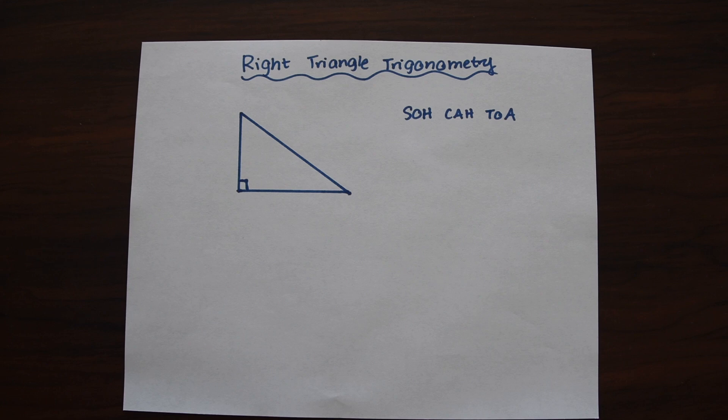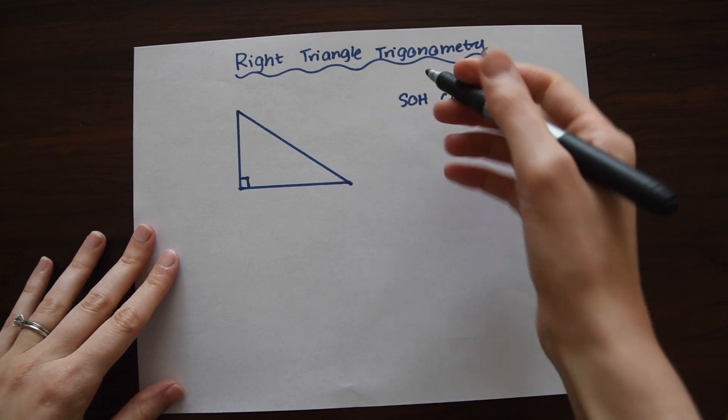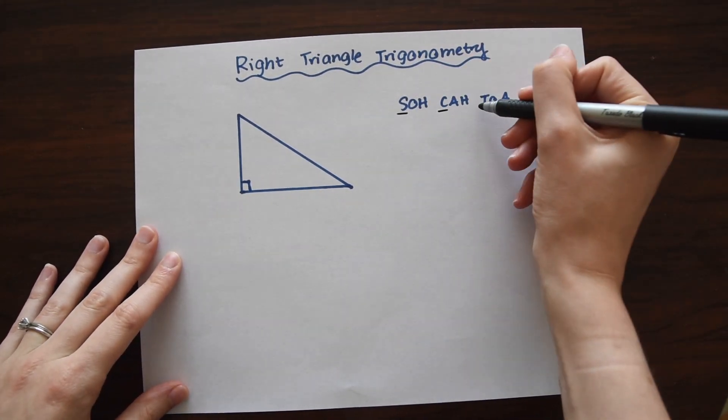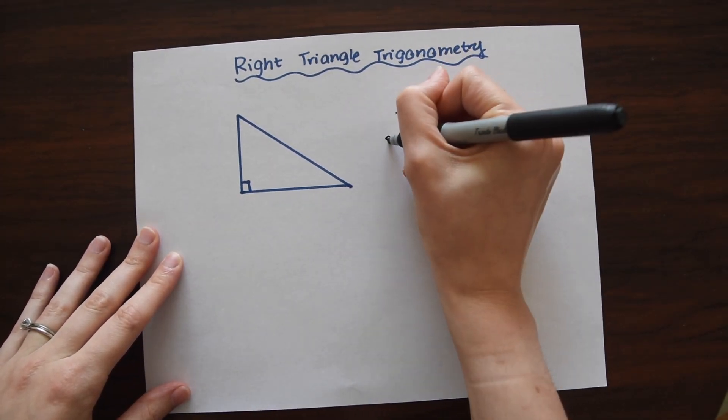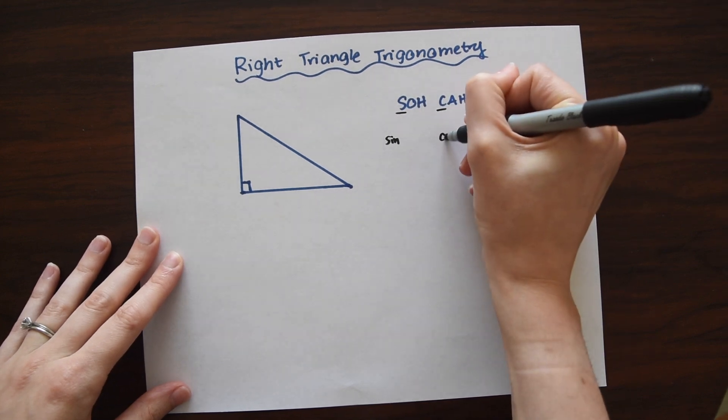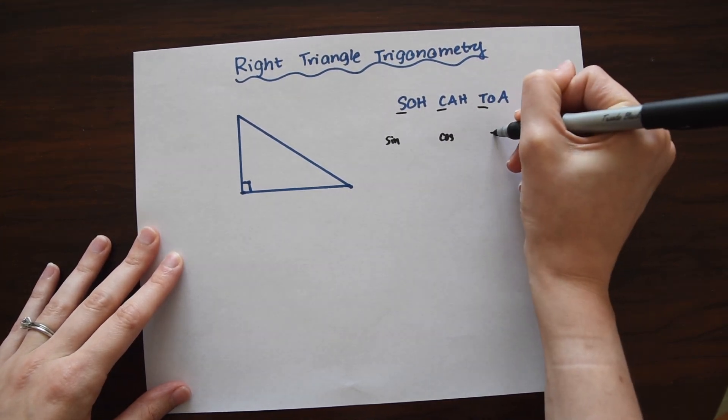So first let's go over the different trig ratios. We have SOHCAHTOA here, where each first letter represents each different ratio. So we have sine over here, this is cosine, and then this is tangent.